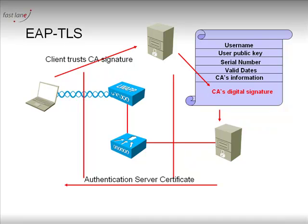That way, with a system of external trust, both supplicant and authentication server can verify that the other is the one it pretends to be. And as this certificate is also a public key, both sides can use the other one's public key to encrypt whatever traffic they need to send back and forth.